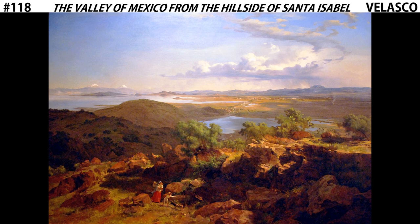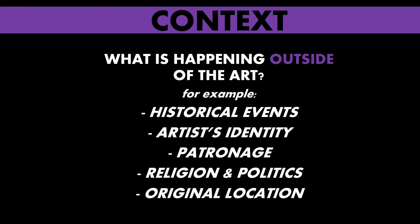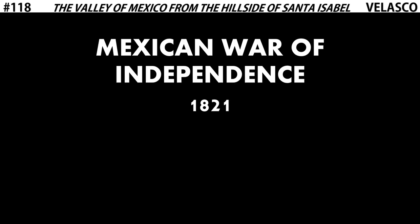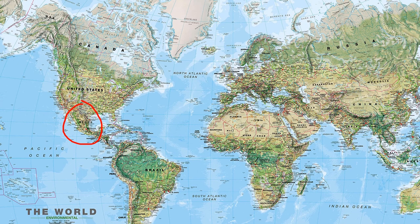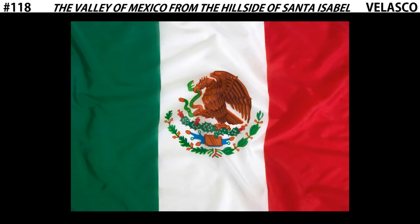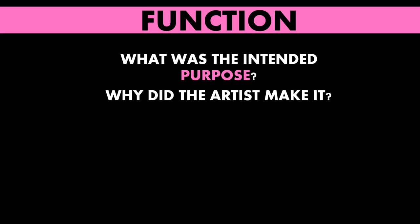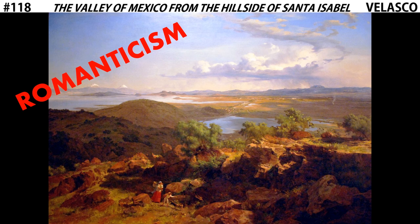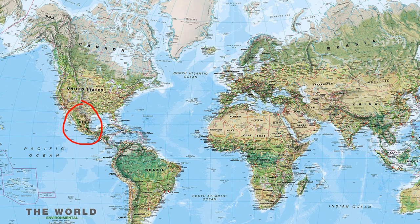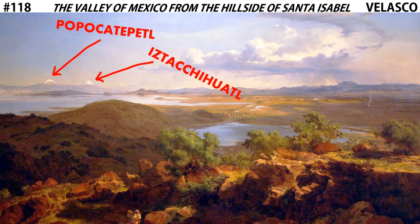Now let's talk about the context. This painting was made soon after the Mexican War of Independence, in which Mexico fought to separate themselves from the European power of Spain. With that, they established themselves as their own sovereign nation with their own cultural identity. So the function of this painting is two-fold: one, it's an exploration of Romanticism as a 19th century movement in Mexico; and two, it's a way of establishing Mexico's cultural identity through the depiction of its capital city, famous landmarks, and its population.